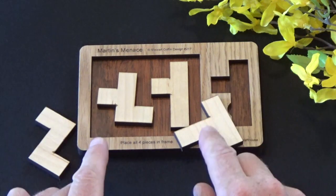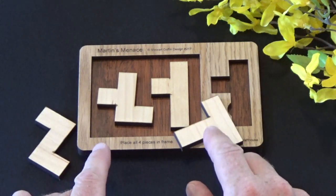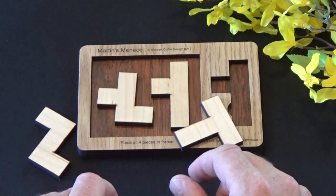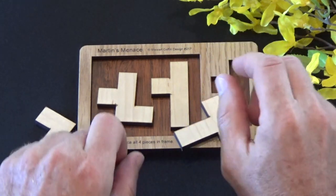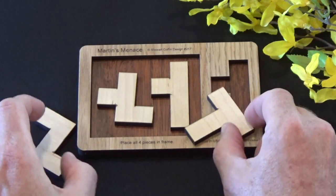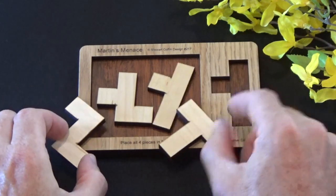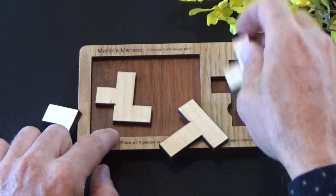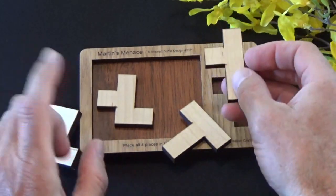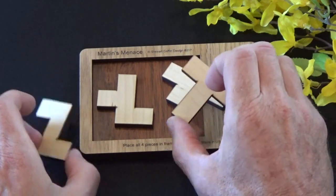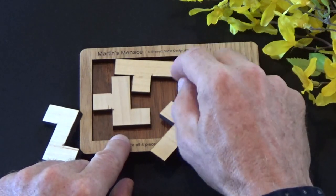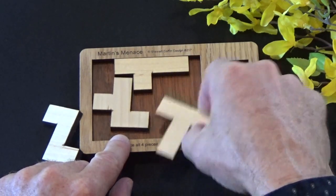So he was unable to solve this four-piece dissection puzzle, and hence the name Martin's Menace. And I will tell you what, it is a good one. You have four pieces here, the fourth piece stores in this location with this particular puzzle when you're not playing with it. But the object is to get all four of these pieces to fit into this frame.